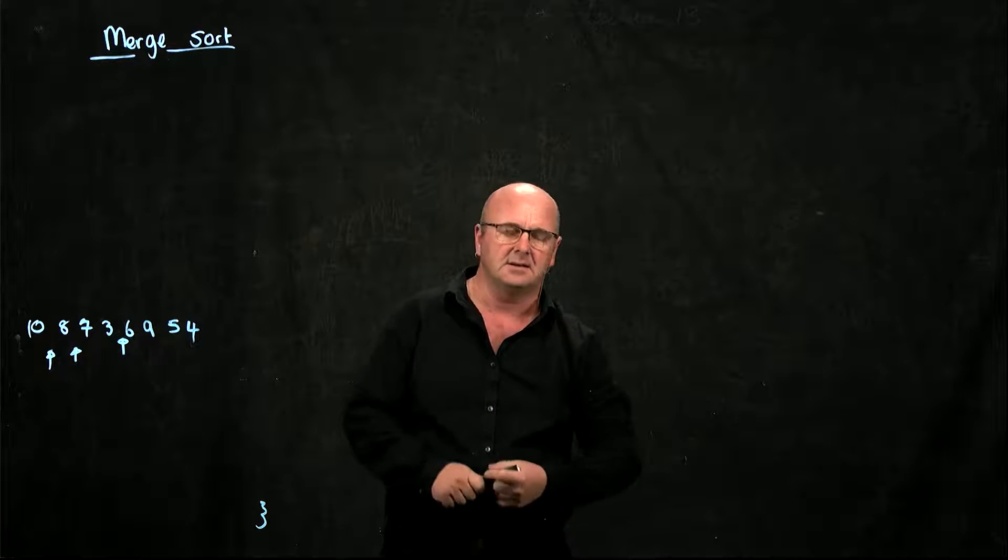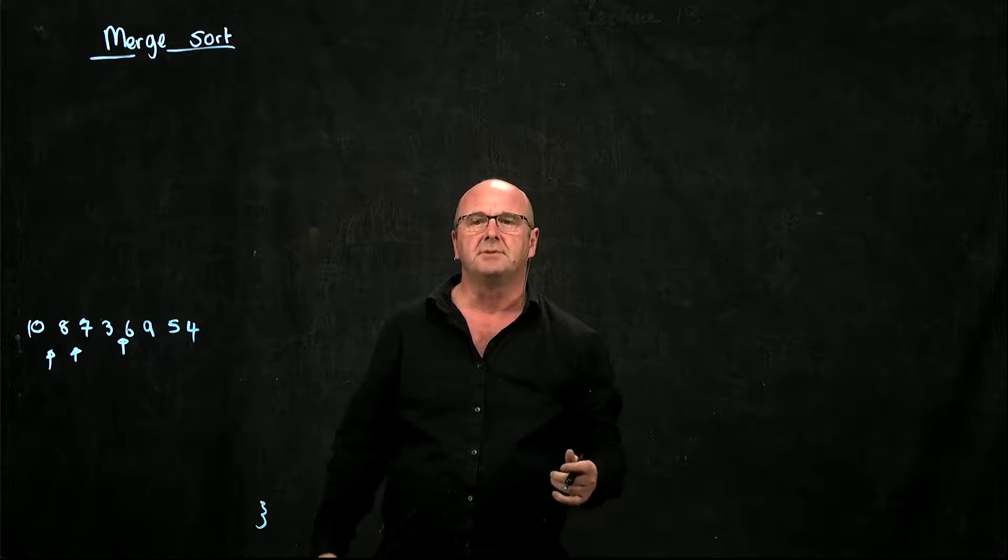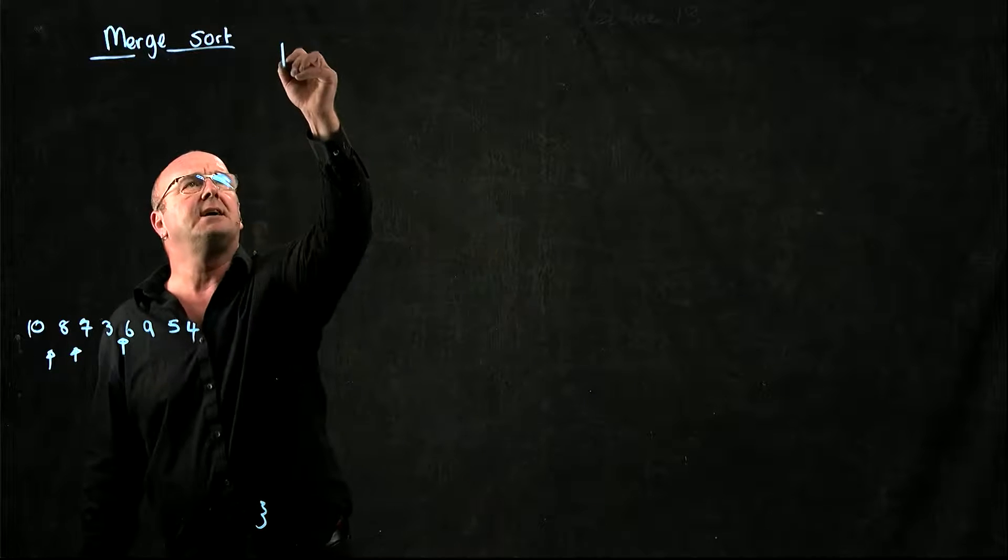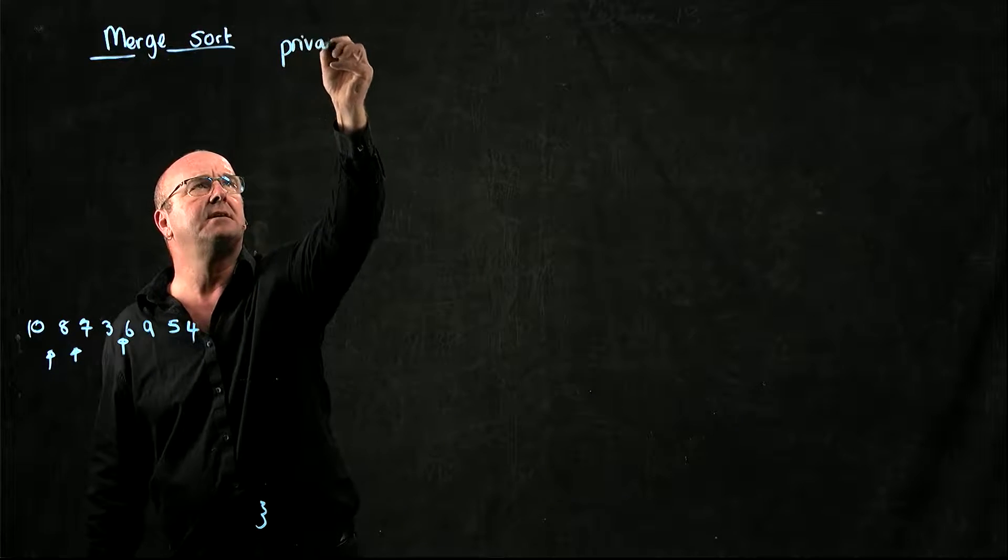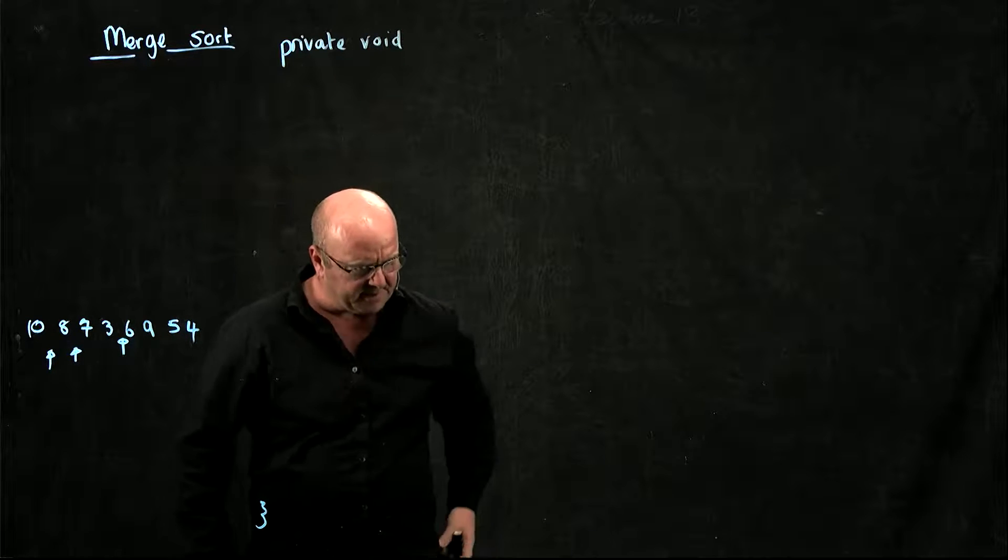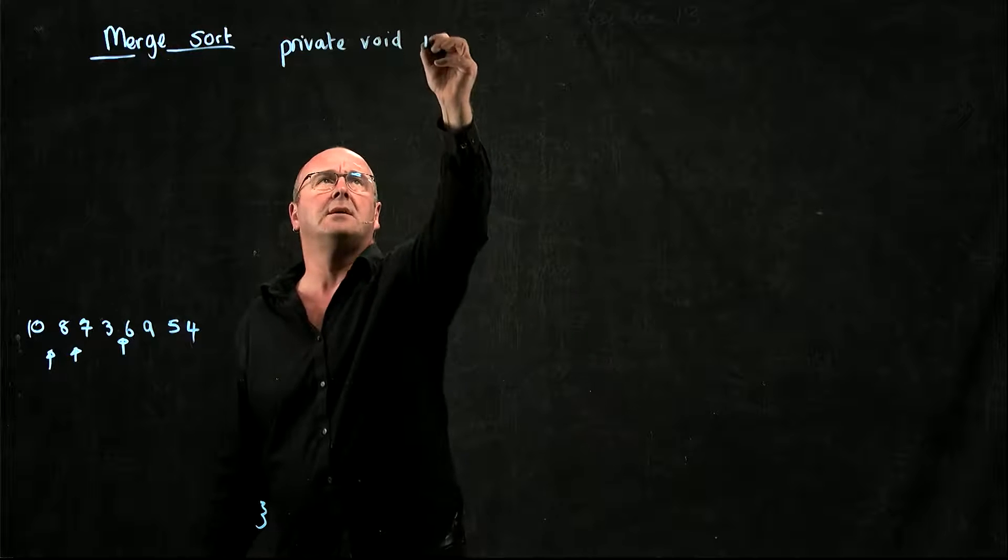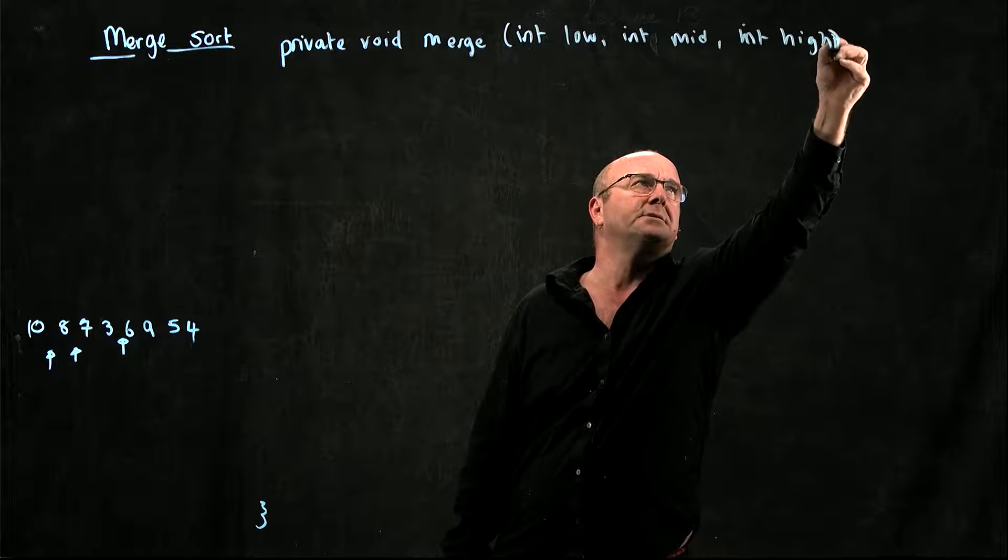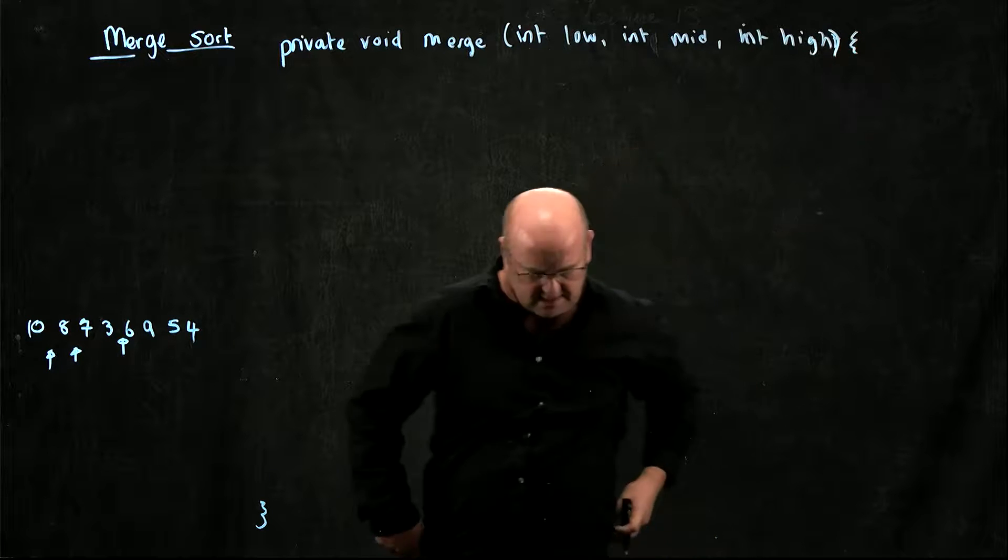So finally, we have the part where we have to do all the work. So we're going to have a private merge method. It's not going to return anything.